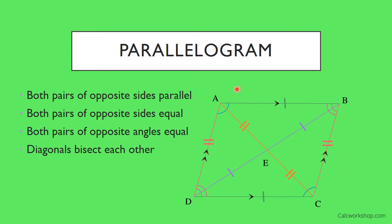Next is the parallelogram, also shortened to 'PARM' — P-A-R-M — so you don't have to write it out in full. Both pairs of opposite sides are parallel, and both pairs of opposite sides are also equal in length. Both pairs of opposite angles are equal, and the diagonals bisect each other.